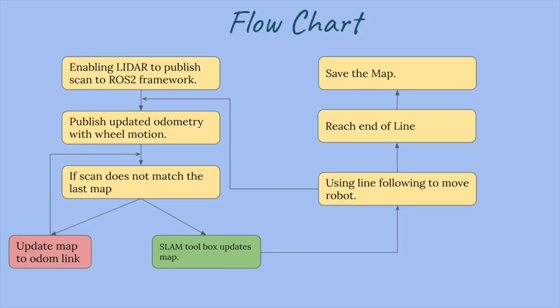In this section we will understand how our project is implemented. First we have a node which enables our LiDAR and publishes the scan in our ROS2 framework. In the same node we update our odometry according to the motion of the wheels and publish the updated odometry. When we give these two inputs to SLAM Toolbox, it looks at the scan — if the scan matches the map it updates the map; if not, it updates the odom link with respect to the map and tries to match the scan again.